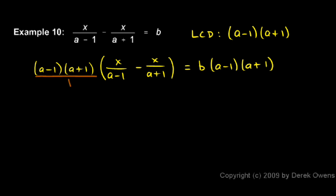Recognize that the (a minus 1) and (a plus 1) are in the numerator, and that a minus 1 will cancel with the a minus 1 in the denominator. I'm left with (a plus 1) times x, and you need parentheses around the a plus 1 there.